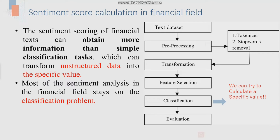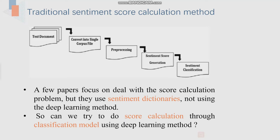But now, most researchers are doing classification tasks. And about the sentiment score, most of them are using sentiment dictionaries, not using the deep learning method. So, can we try to do score calculations through classification models?